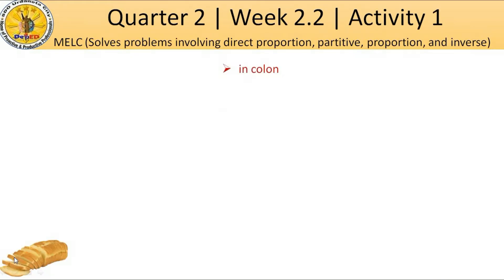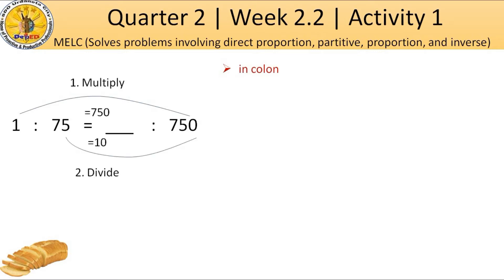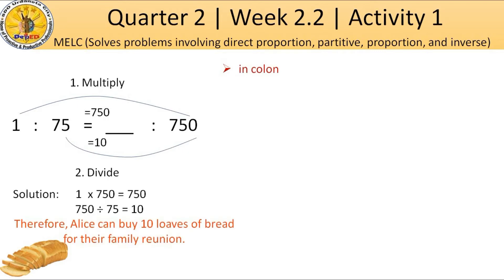Now, for us to answer the problem, simply multiply 1 to 750, after which the product will be divided by 75, and the answer is 10. Therefore, Alice can buy 10 loaves of bread for their family reunion.